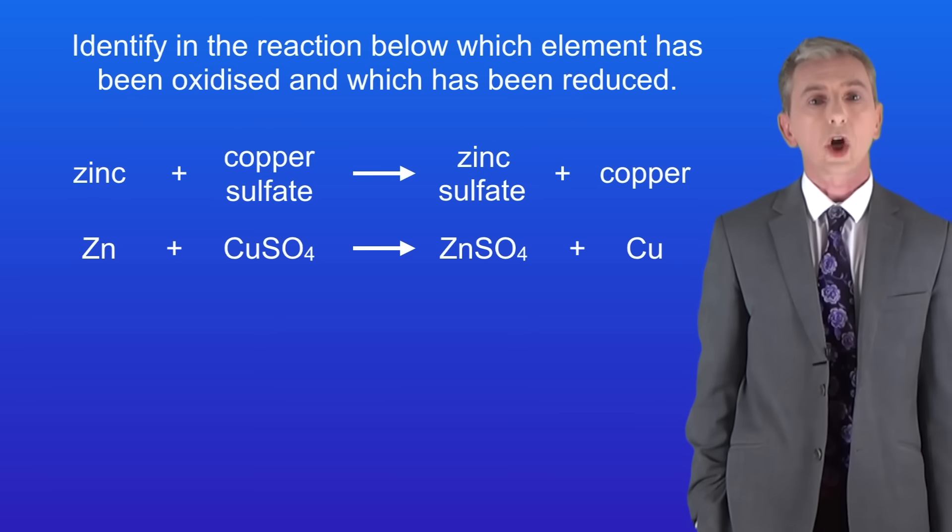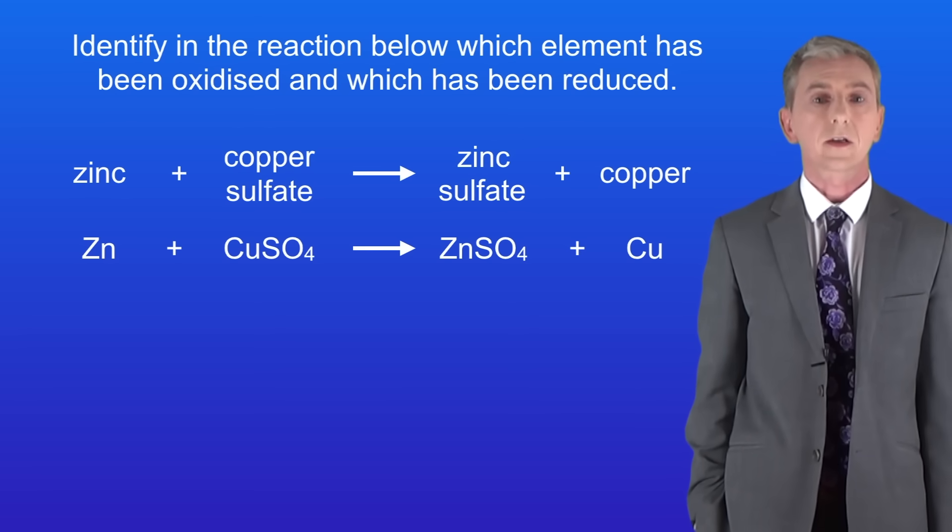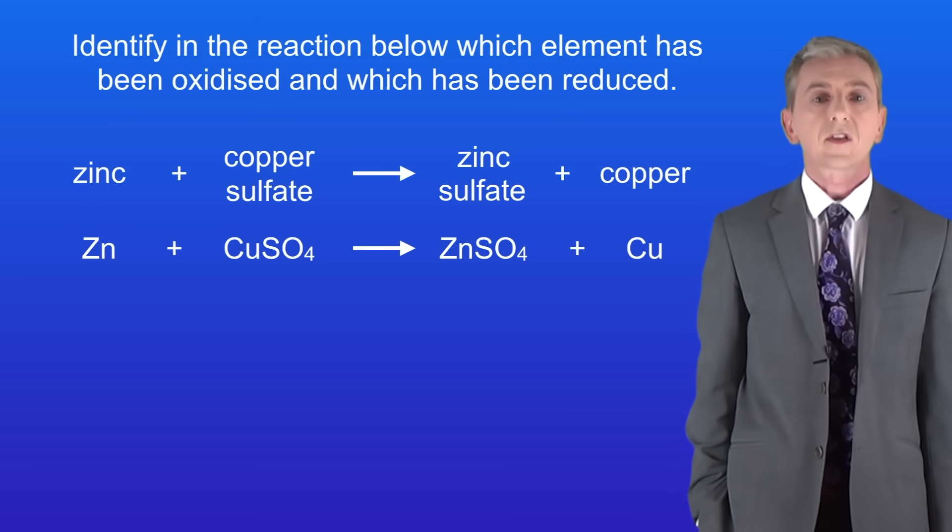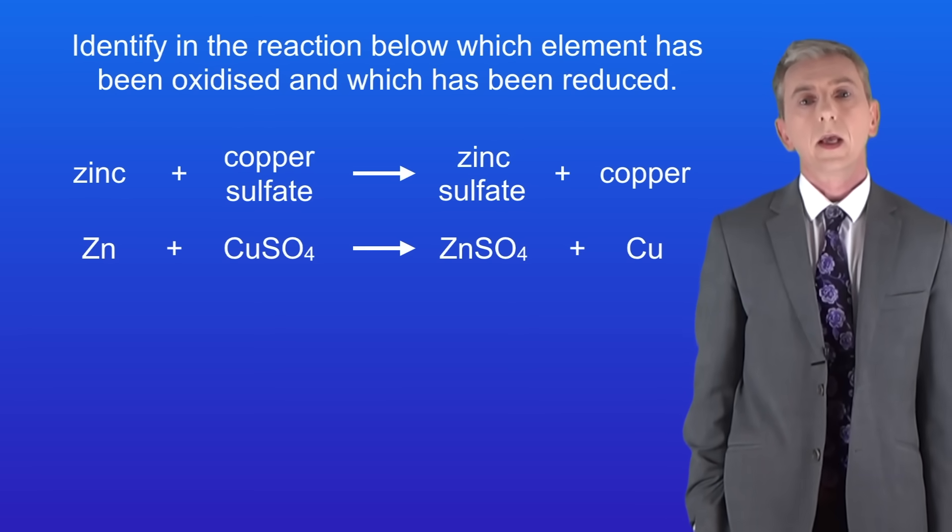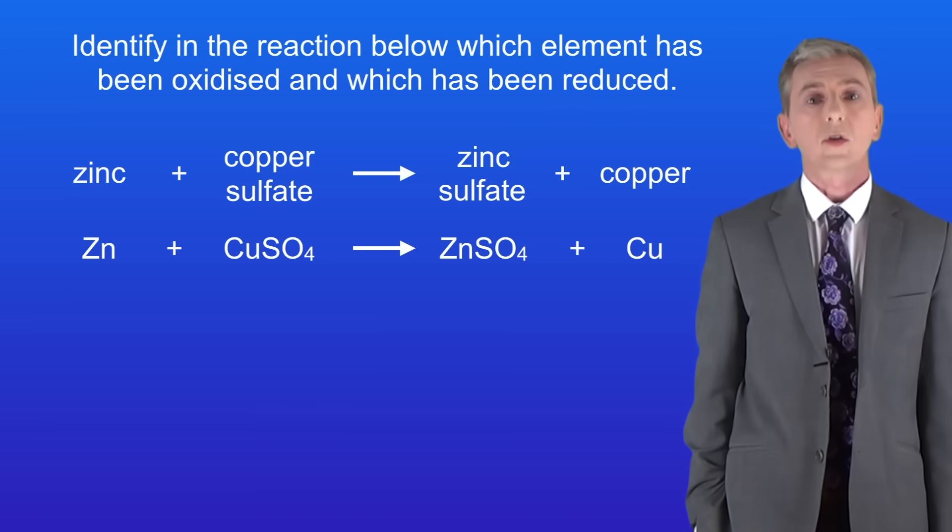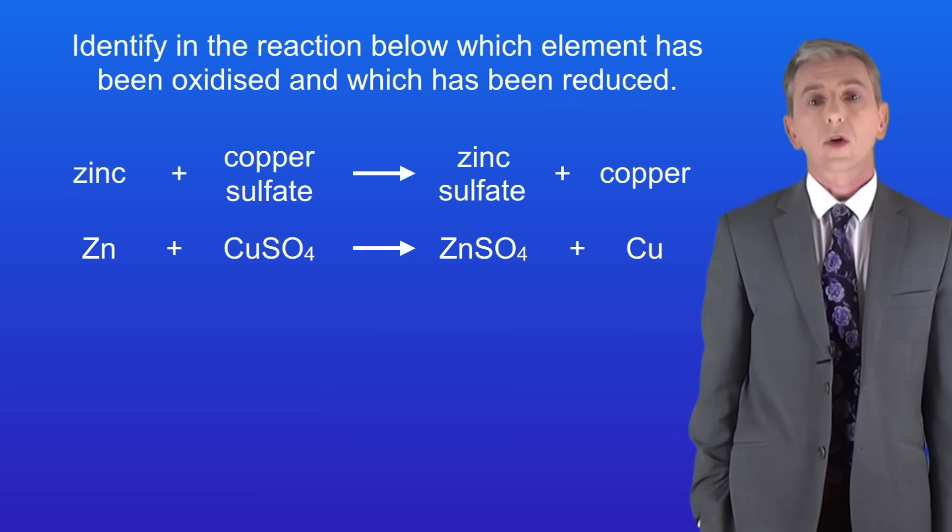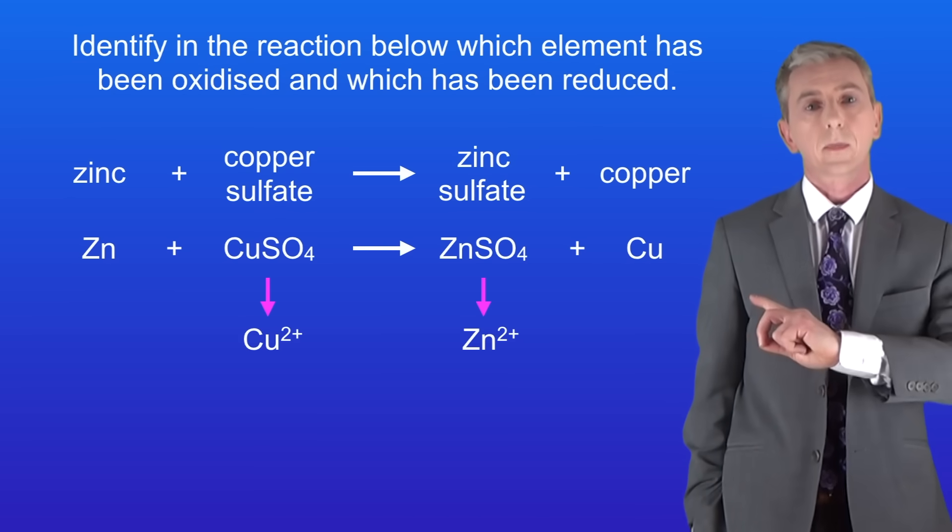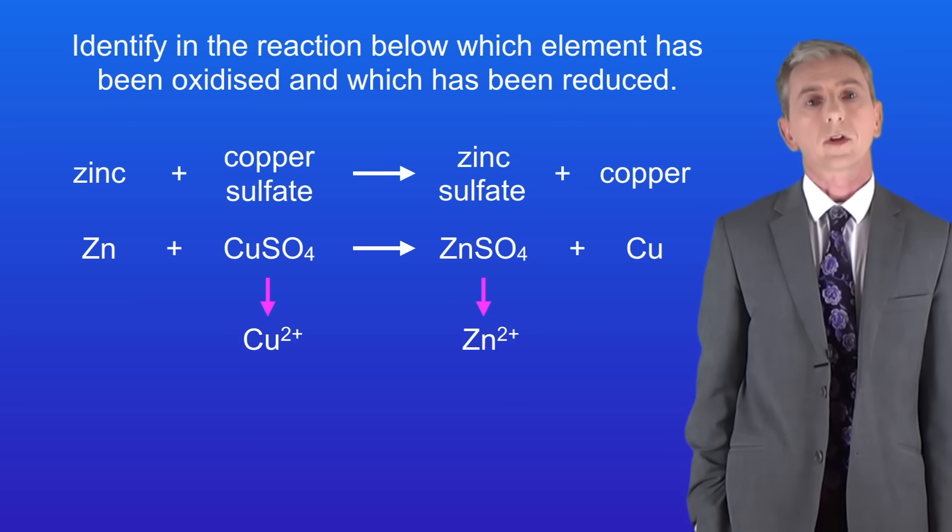This shows zinc reacting with copper sulfate to form zinc sulfate and copper. This is a displacement reaction. Now in order to answer this question, you need to know the ions present, so I'm showing you these here. Pause the video and try this question.